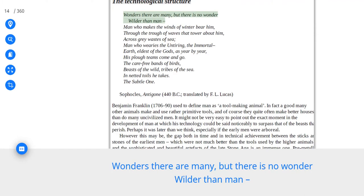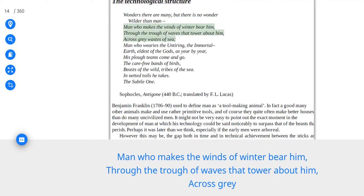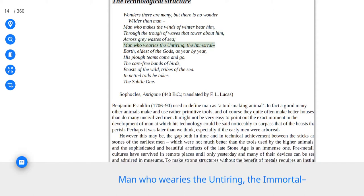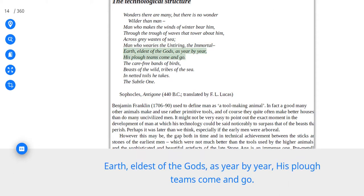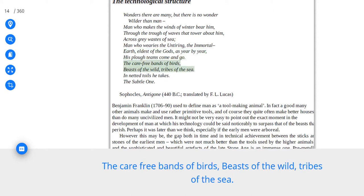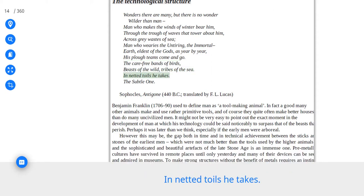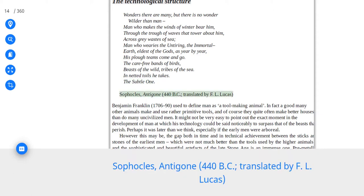Wonders there are many, but there is no wonder wilder than man. Man who makes the winds of winter bear him, through the trough of waves that tower about him, across grey wastes of sea. Man who wearies the untiring, the immortal Earth, eldest of the gods, as year by year, his plough teams come and go. The carefree bands of birds, beasts of the wild, tribes of the sea, in netted toils he takes. The subtle one. Sophocles, Antigone, 440 BC, translated by F.L. Lucas.